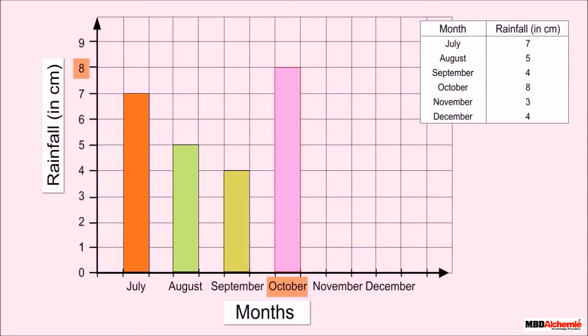The month of October receives eight centimeters of rainfall, so we shade the boxes up to eight. The month of December receives four centimeters of rainfall, so we shade the boxes up to four.